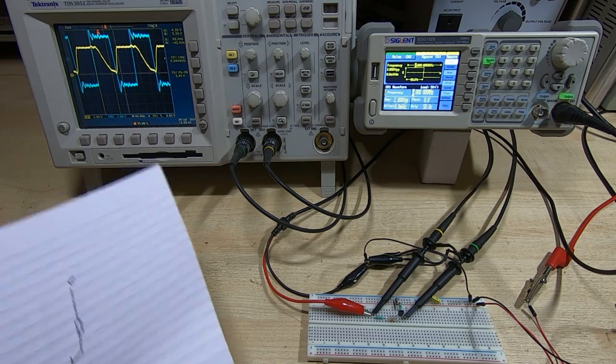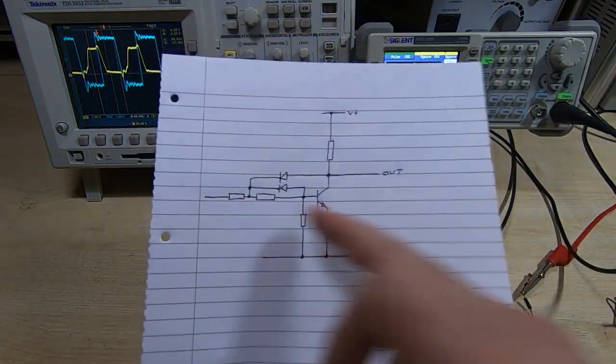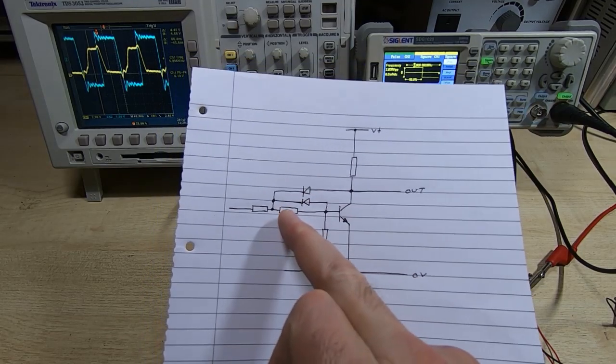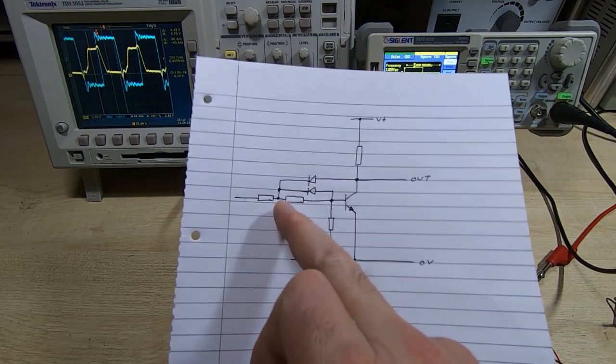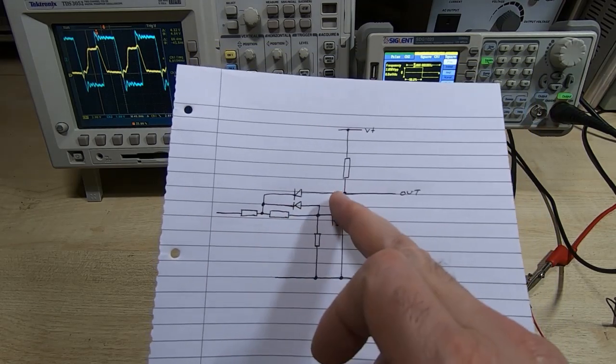Okay, so what I've done here is added a couple of diodes, and this is why we have two resistors here - so that I could have access to the junction between them. And as you can see, they're arranged to provide a form of clamping to the input.